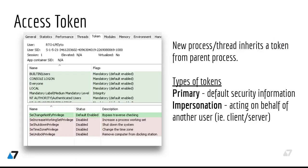Access tokens are the foundation of all authorization decisions on the operating system. They are granted to authorized users by the Local Security Authority, also known as the LSAS process. Each access token includes the user's security identifier (SID), which is essentially a number. It also includes group SIDs the user belongs to, some privileges, the user's integrity level, and other security-relevant information. Every process or thread created by a user inherits a copy of their token.